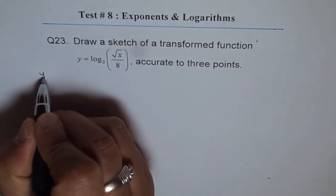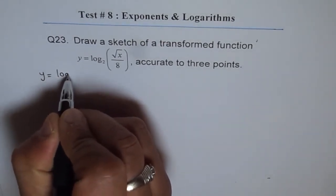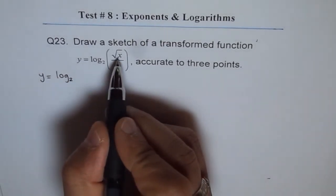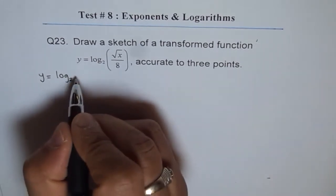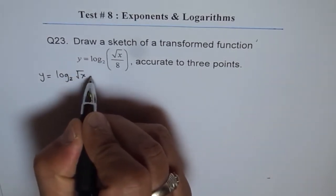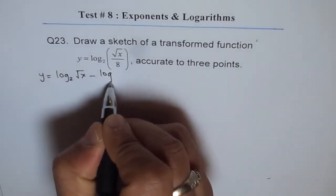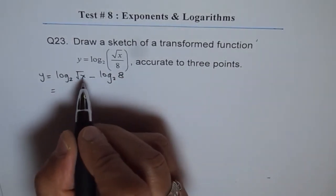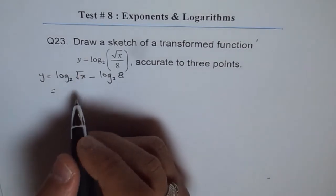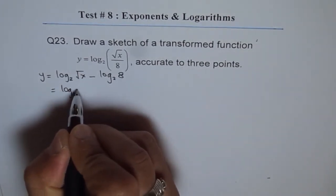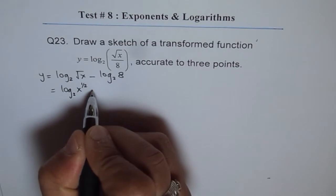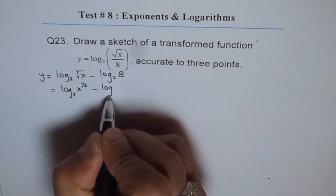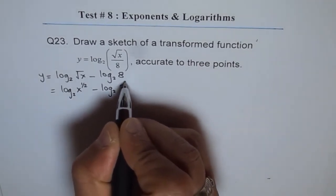So we have y equals log₂ of—this is like division. So we can write this as log₂(x) minus log₂(8). Now this is x to the power of half, so we can write this as log₂(x^(1/2)) minus log₂(2³).